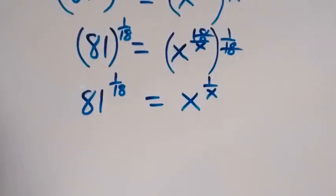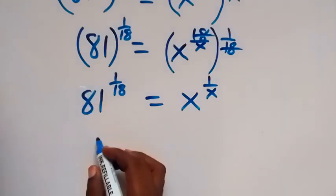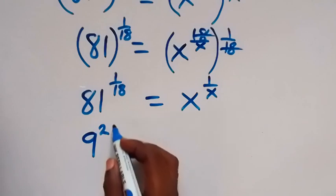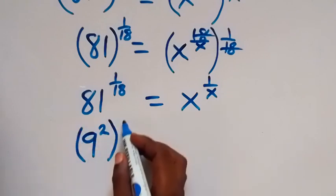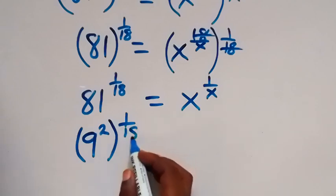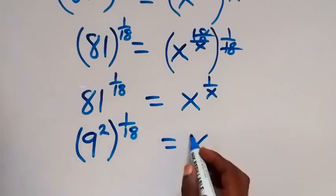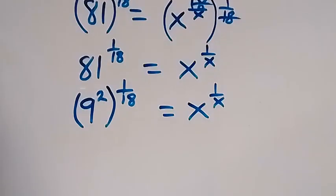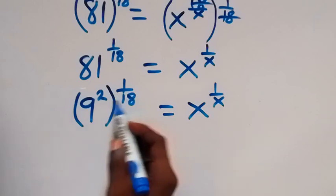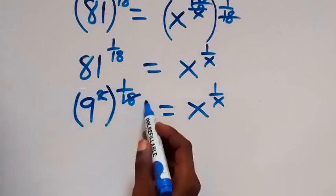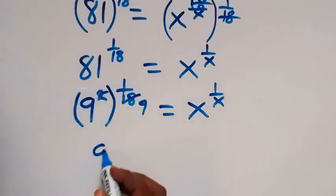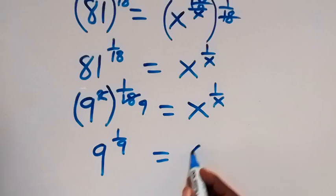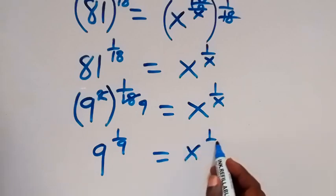Then in the next step, we can express 81 as 9 squared, as 9 squared, then raised to the power of 1 over 18, which is equal to x raised to the power of 1 over x. Since this power multiplies, 2 will go into 18 as 9. So this is 9 raised to the power of 1 over 9, which is now equal to x raised to the power of 1 over x.